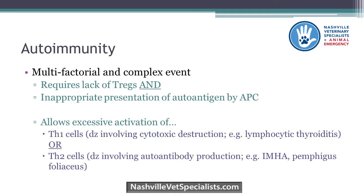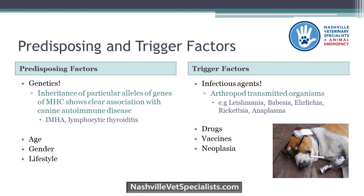Back to autoimmunity — it's multifactorial and complex. To have an immune reaction, you need a lack of T regulatory lymphocytes as well as inappropriate presentation of autoantigen by the antigen-presenting cell. This allows excess activation of Th1 cells, important in diseases involving cytotoxic destruction of cells like lymphocytic thyroiditis, or excess activation of Th2 cells, more important for diseases involving autoantibody production like IMHA and pemphigus foliaceus.